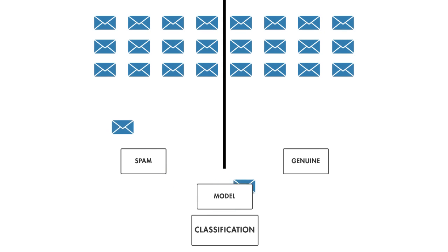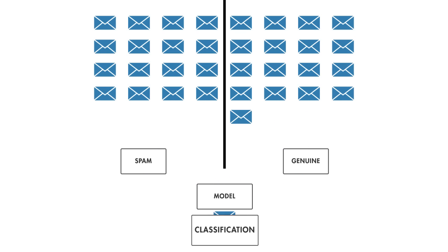Classification techniques predict discrete responses, like whether an email is genuine or spam. Essentially, these models classify input data into a predetermined set of categories.